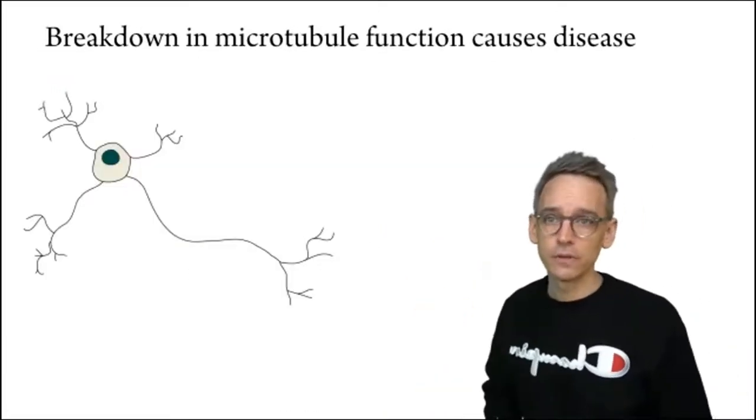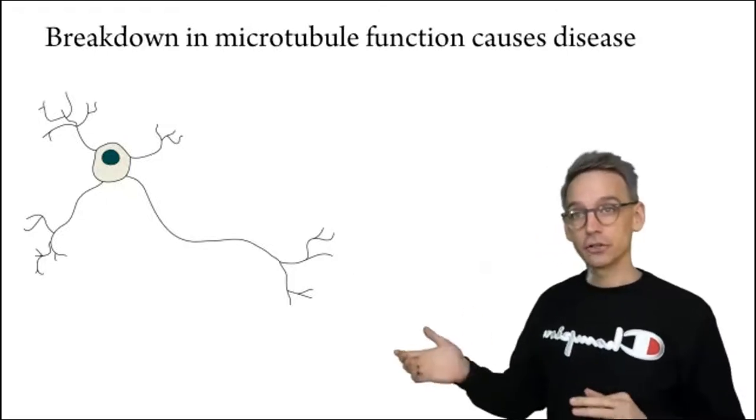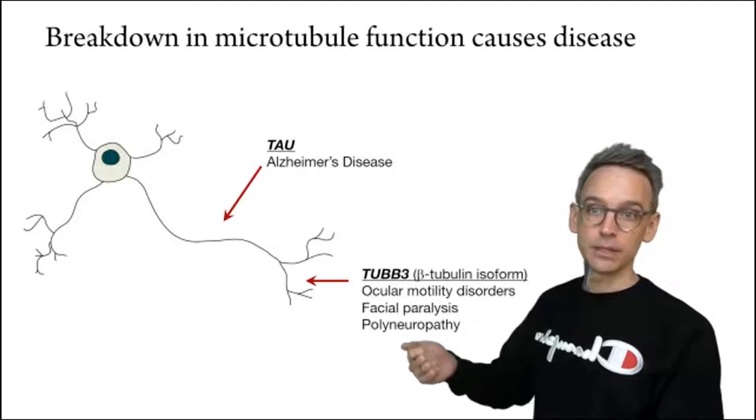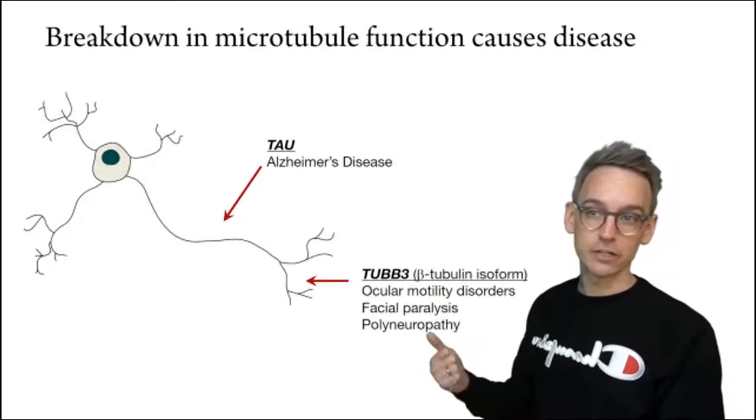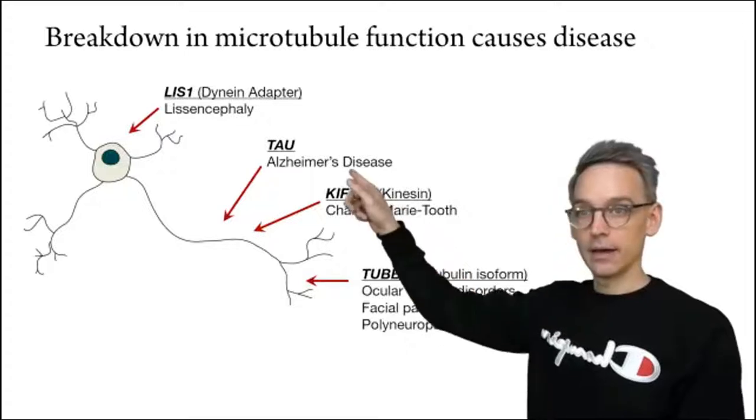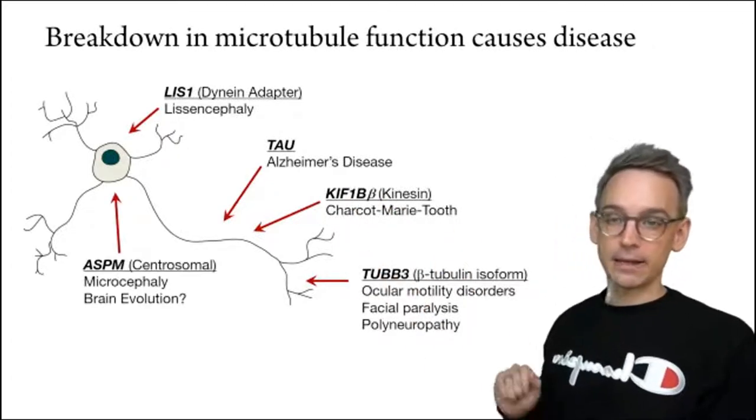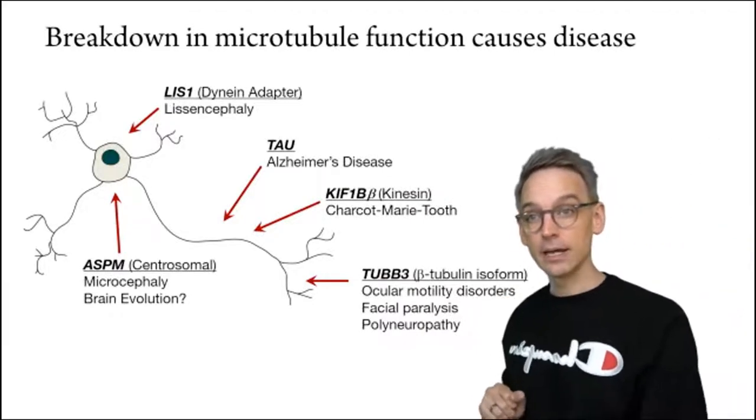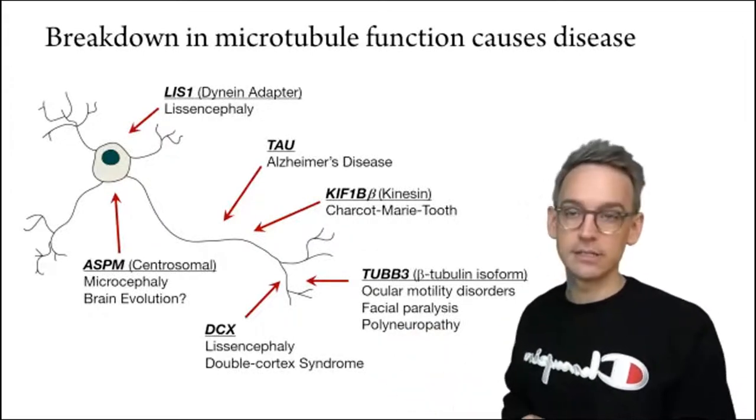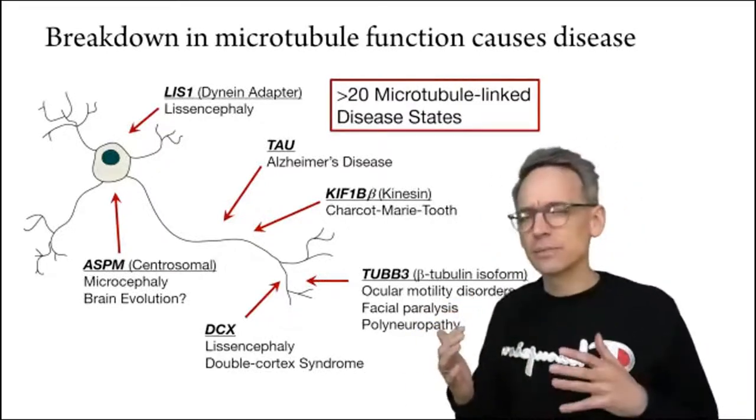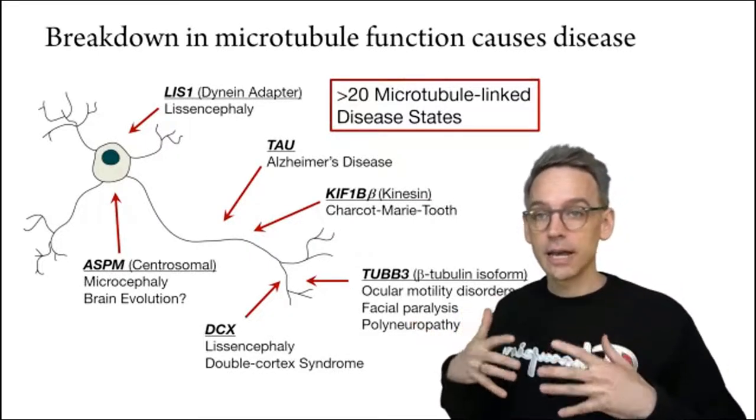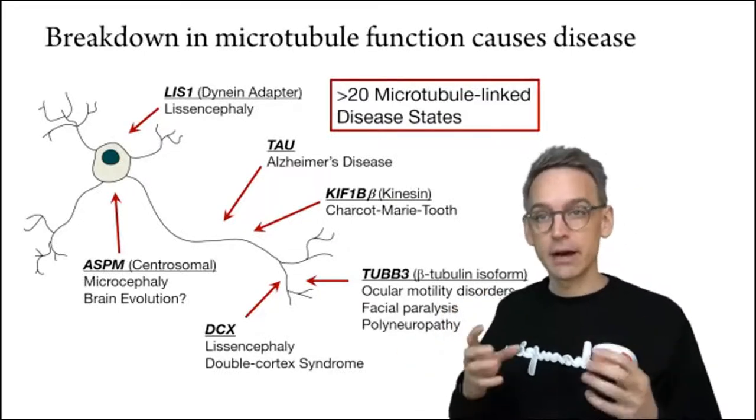Now there are a large number of diseases of brain development and neurodegeneration that are linked to breakdown in microtubule function. Perhaps one you've heard of is tau. This is a protein that's implicated in Alzheimer's disease. But there are also point mutations in tubulin itself that cause facial paralysis, a form of neurodegeneration, a form of smooth brain disease called lissencephaly caused by a protein that is bound to microtubules. There's implications of microtubules in brain size and brain evolution. And a protein that my lab spends a lot of time working on called doublecortin or DCX, which causes a disease called double cortex syndrome. And there are at least 20, possibly 25 or 30 microtubule-linked disease states, all of which require us to understand how cells create new microtubules, how they break them down, and how they use them.